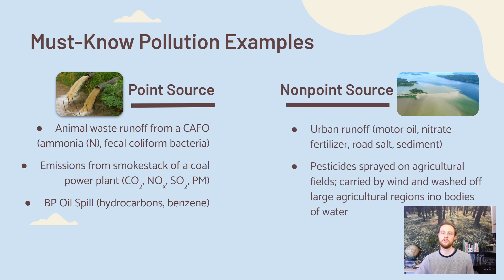For non-point source examples, a great one is urban runoff. When it rains on a large urban area, stormwater collects any pollutants on the pavement and flows into storm drains, which eventually drain into a river. Even though there may be one storm drain discharging all of that runoff, it comes from a huge area, so we consider it a non-point source. Specific pollutants in urban runoff include motor oil from vehicles, nitrate from fertilizers on lawns or urban gardens, road salts, and sediment — sand, gravel, and grit — which washes into rivers and can have environmental consequences.